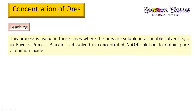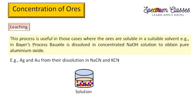The next process is leaching, which is useful where ores are soluble in a suitable solvent. For example, in the Bayer's process, bauxite is dissolved in concentrated NaOH — since alumina is soluble — and insoluble impurities are removed through filtration, after which aluminium oxide or alumina can be recovered. Similarly, this method is applicable for silver and gold by their dissolution in NaCN and KCN solutions, though these are very hazardous to handle and generally avoided.